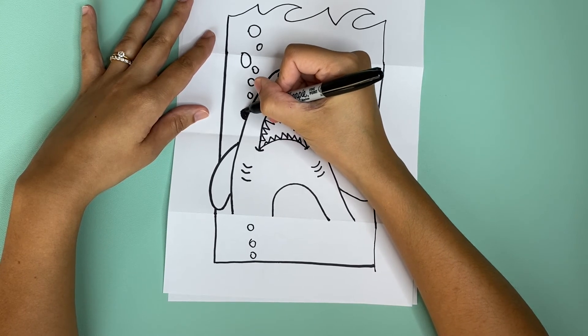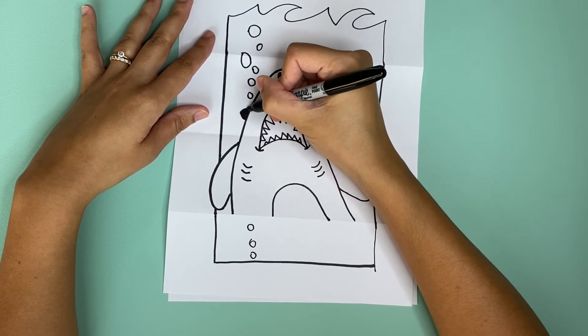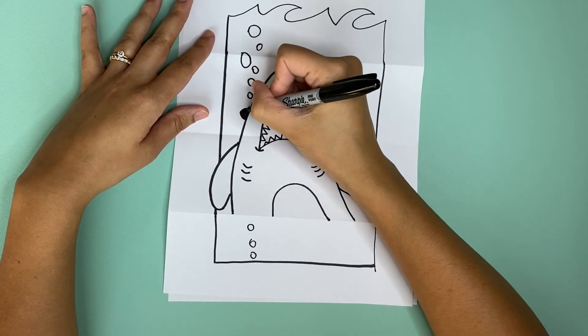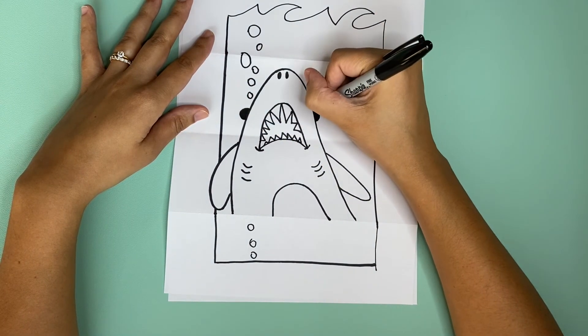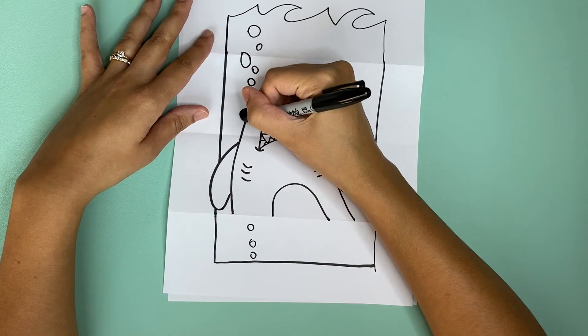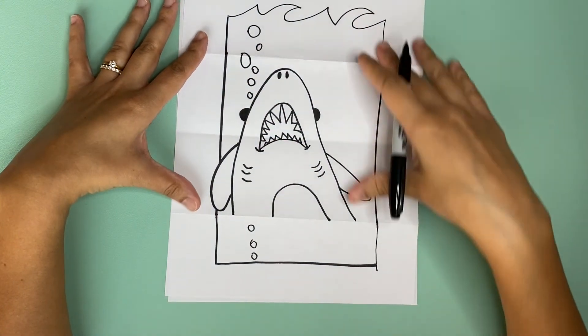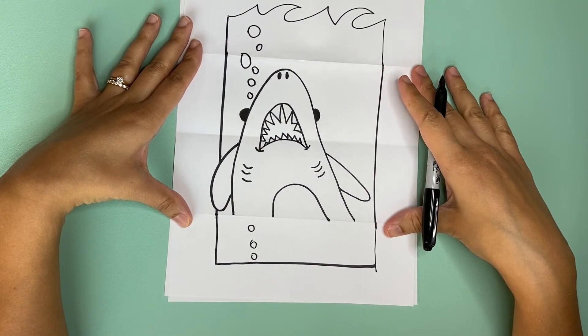That worked out. He has to see. There we go. Just trying to make it even. Okay let's color it in.